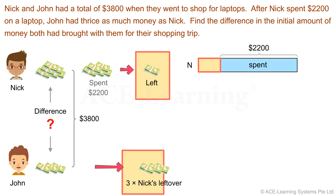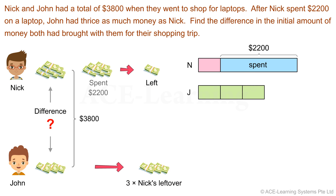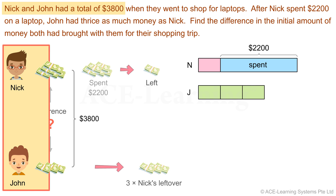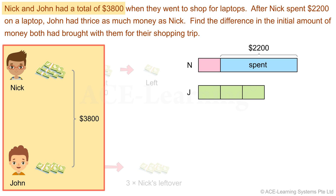John's amount of money is compared with the remaining part of Nick's amount. How many times of this part? Three. Note: since John did not spend any money, these three units represent his initial amount of money. Do we have more information to add to the model? They have a total of $3,800 when they started out. We'll use a curly bracket here to represent a sum, and then indicate the sum, which is $3,800.